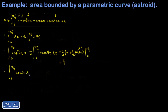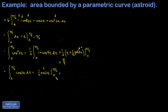The third integral is ∫cos 2t dt from 0 to π/2. The antiderivative is (1/2) sin 2t. Evaluating: at t = π/2 we get sin π = 0, and at t = 0 we get sin 0 = 0. So this term vanishes completely.